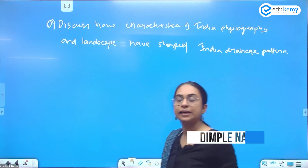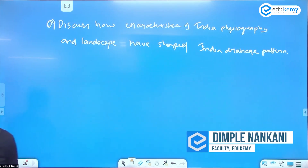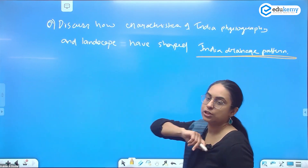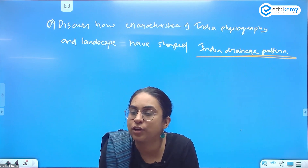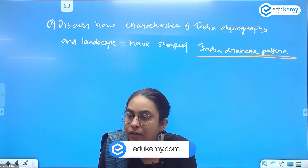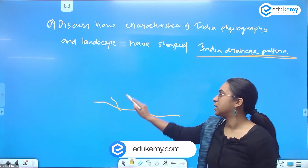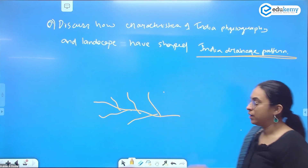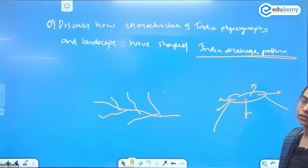The question is about India's physiography characteristics and landscape characteristics which have shaped the drainage pattern. What are the patterns of drainage? The dendritic, radial, trellis — these are the patterns. The dendritic pattern is like a tree, where for example in the northern plains it appears like there are branches of a tree. You have a radial drainage — an example of radial drainage is Amarkantak.